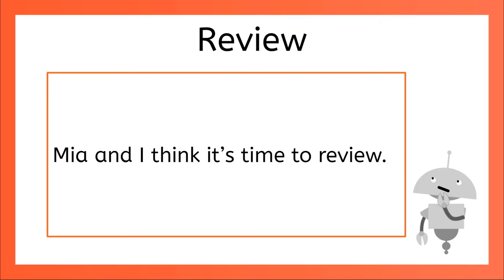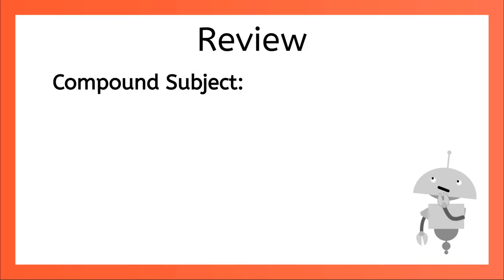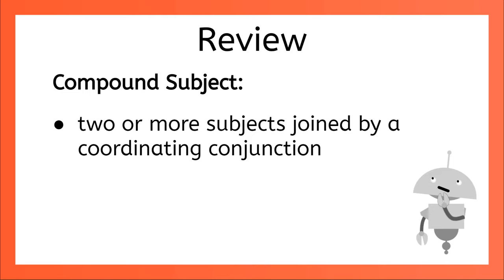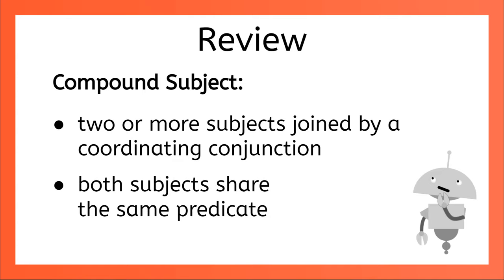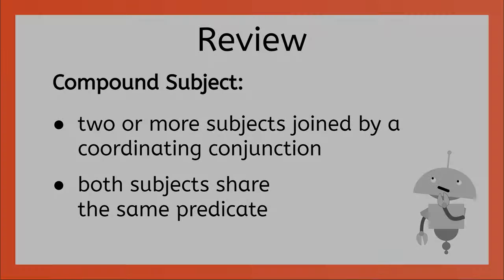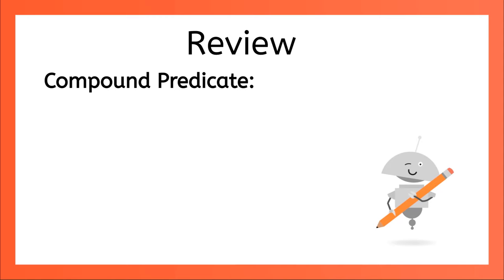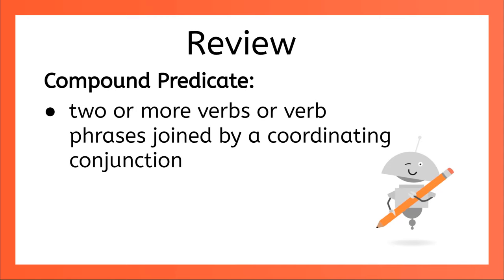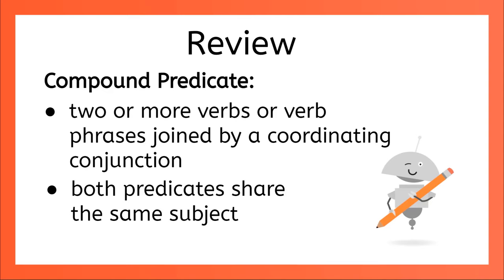Mia and I think it's time to review. Hey, did you notice my compound subject — Mia and I? Remember, a compound subject is two or more subjects joined by a coordinating conjunction, and both of these subjects share the same predicate. And we have a compound predicate when we have two or more verbs or verb phrases joined by a coordinating conjunction, and both of these predicates share the same subject. Just one more reminder: always be clever.